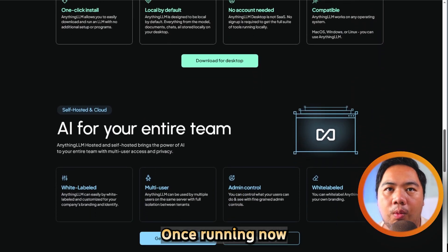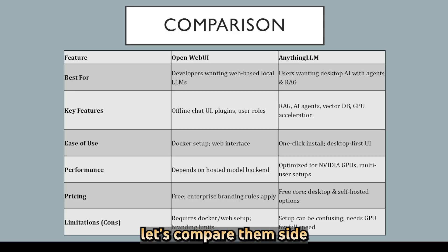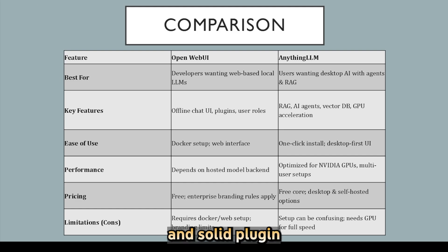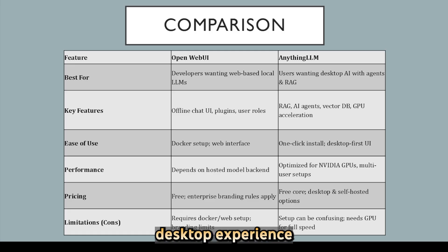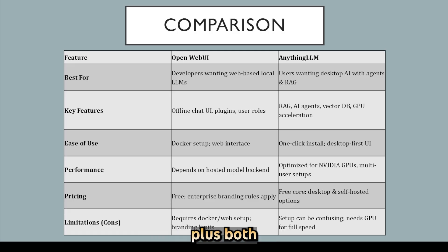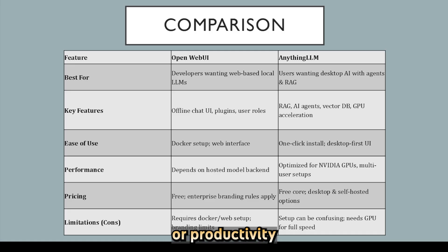Some users report setup confusion, but it's great once running. Now let's compare them side by side. Open Web UI shines as a web-based PWA with solid plugin support and offline accessibility — ideal for developers. AnythingLLM provides a streamlined desktop experience with built-in RAG and agent capabilities, plus multi-user and GPU acceleration support, great for teams or productivity-focused users.